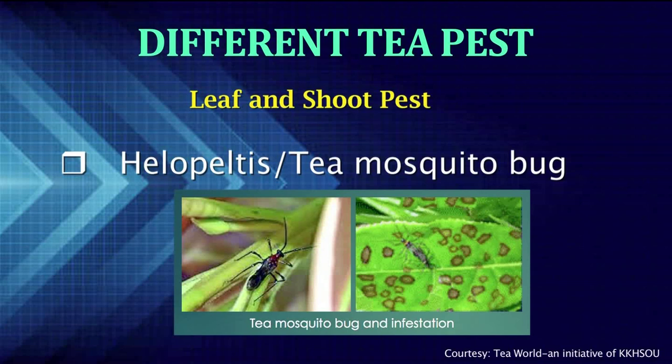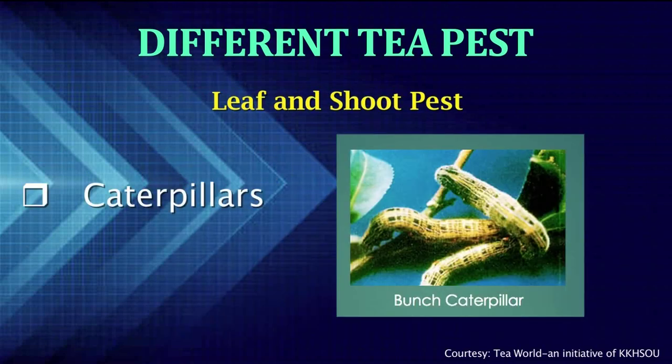The second is Helopeltis, or the tea mosquito bug. The tea mosquito bug is a sucking insect that causes extensive damage in tea. During winter, its population comes down and reappears from February–March in the northeastern part of India. Third is the caterpillars. Caterpillars are of different types: looper, bunch caterpillar and red slug. Basically, these caterpillars feed on mature leaves of tea.